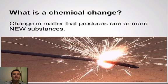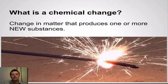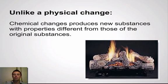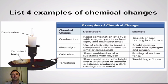A chemical change is different. It's a change in matter that produces one or more new substances. For example, in this sparkler here, the properties of the materials made at the end of this chemical change are no longer the same as the properties of the items beforehand. Unlike a physical change, chemical changes produce a new substance with properties completely different from the original substances. When that wood burns, when it's done there is no more wood left — it's changed into something new. Your textbook gives great examples of chemical changes: combustion, electrolysis, oxidation, and tarnishing, with a description and example of each.